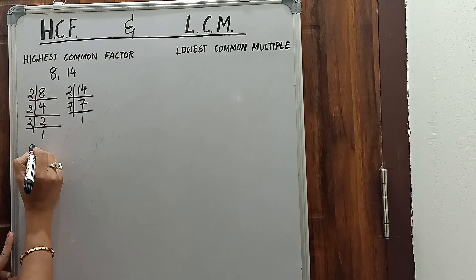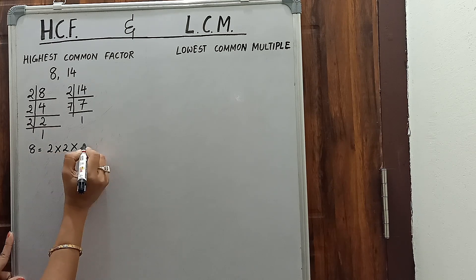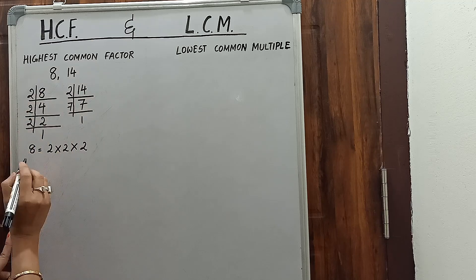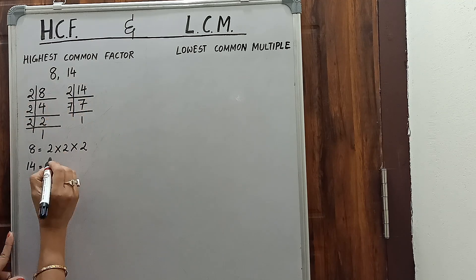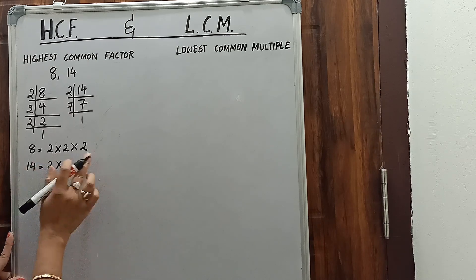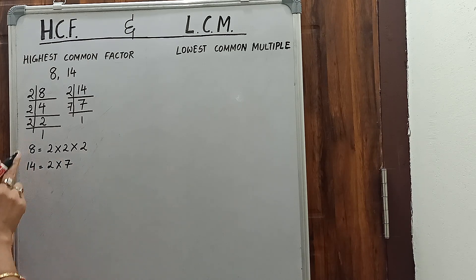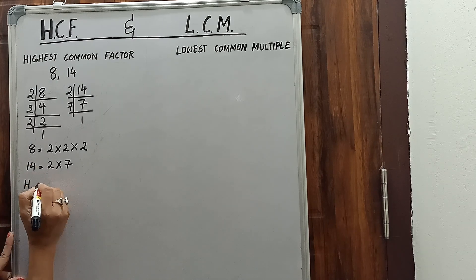Now the factors of 8 are 2, 2, 2, so we write here 2 into 2 into 2. And the factors of 14 are 2 and 7, so 2 into 7. Now we will find out the HCF of 8 and 14.